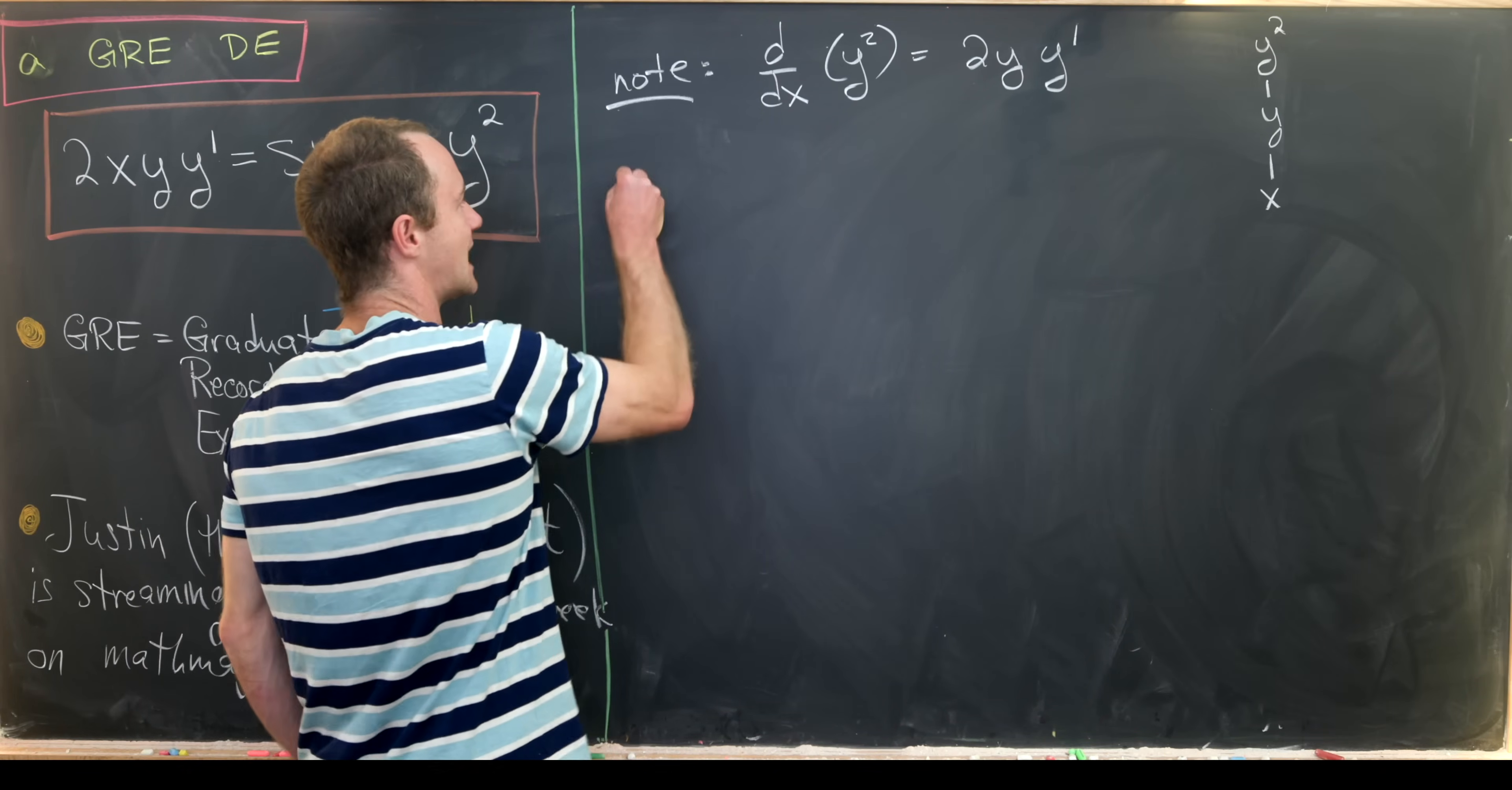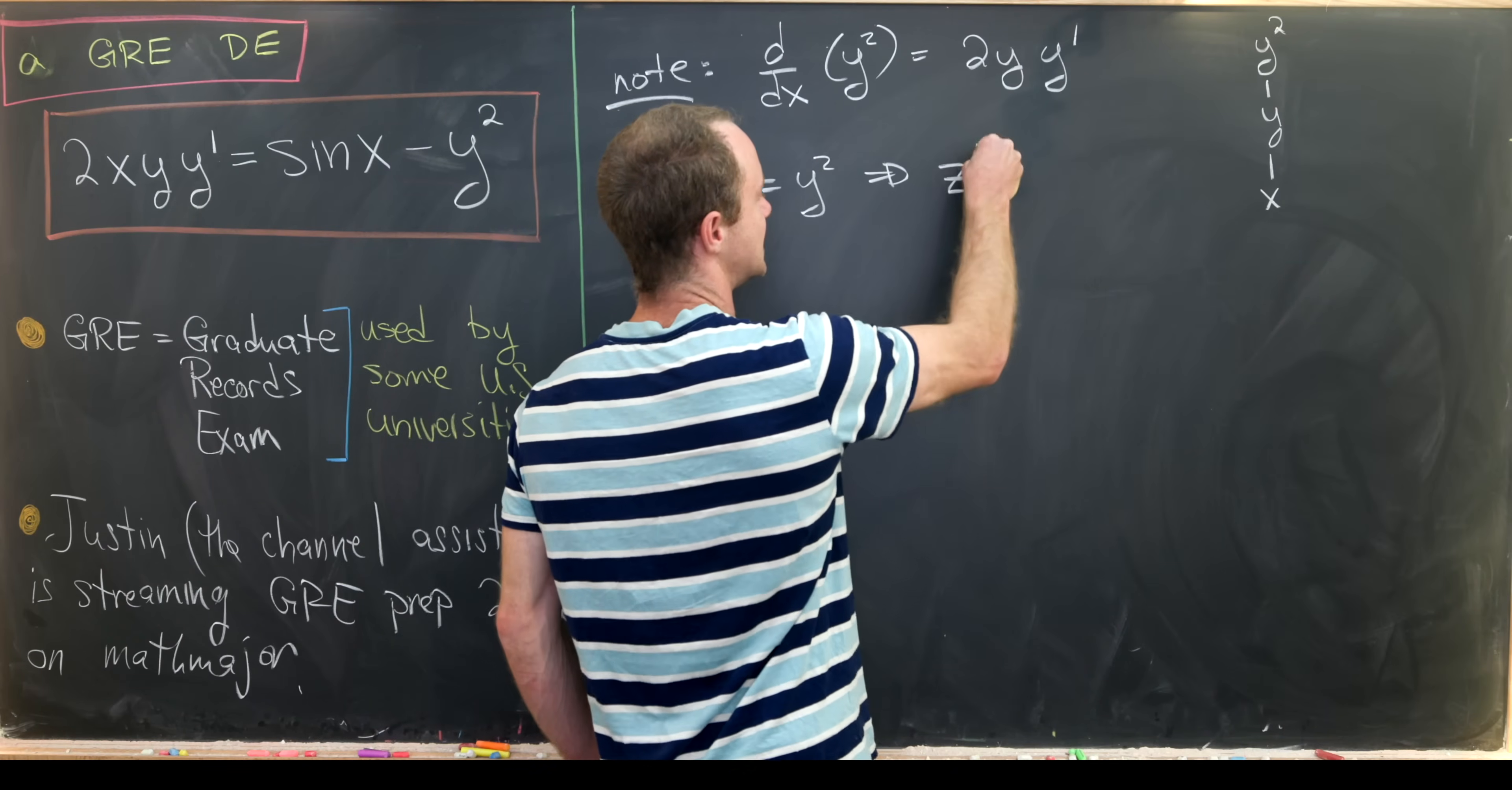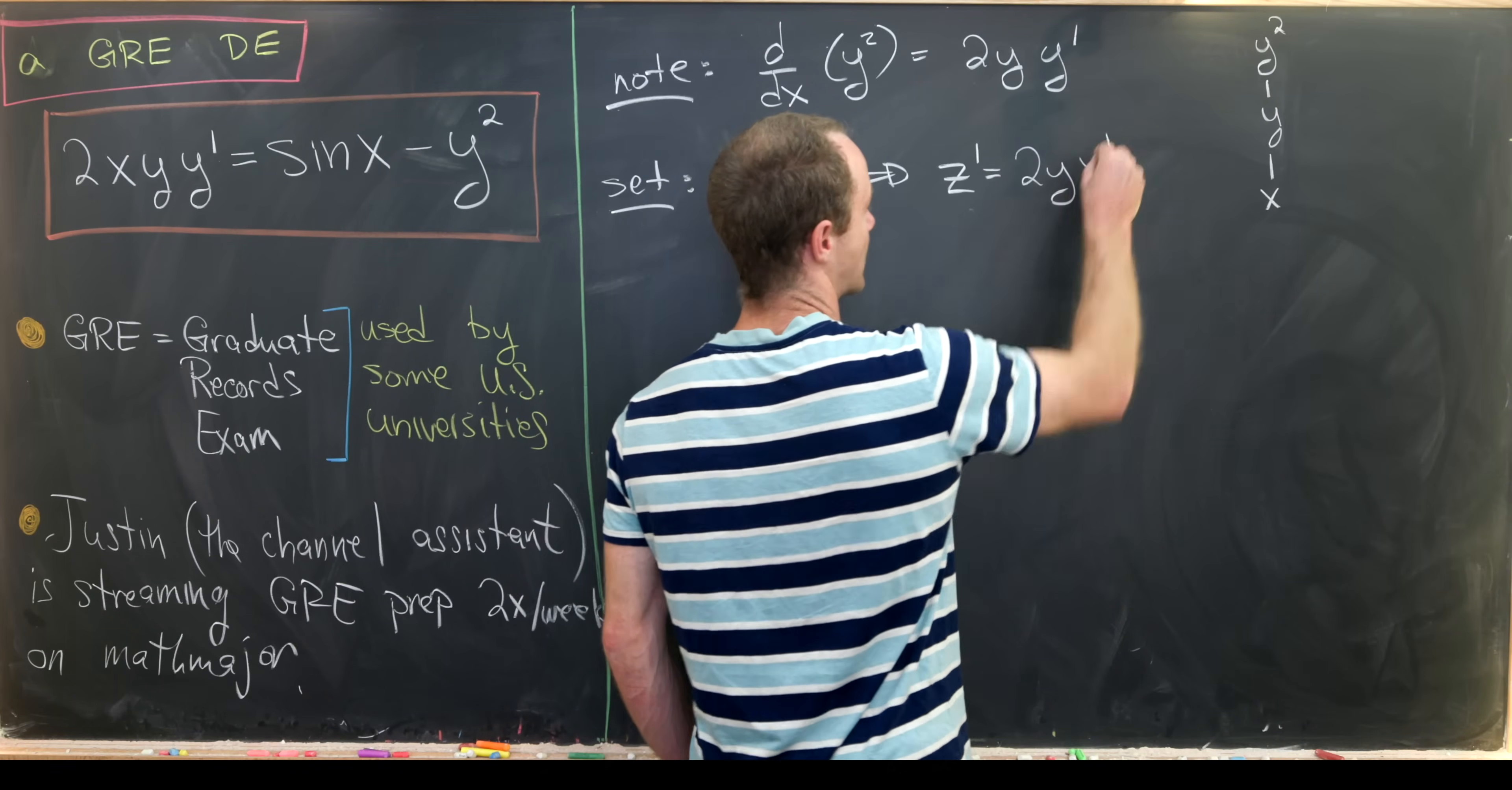Okay, so that motivates us to make a change of dependent variables. Let's set z equal to y squared and note that z prime, which is the derivative of z with respect to x, is equal to 2 y y prime.